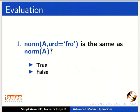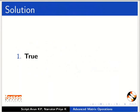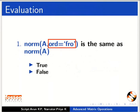Here is a self-assessment question for you to solve. Norm inside brackets A comma ORD is equal to inside single course FRO is same as norm inside brackets A. True or false? And the answer is true. Since the order is equal to inside single course FRO stands for Frobenius norm.